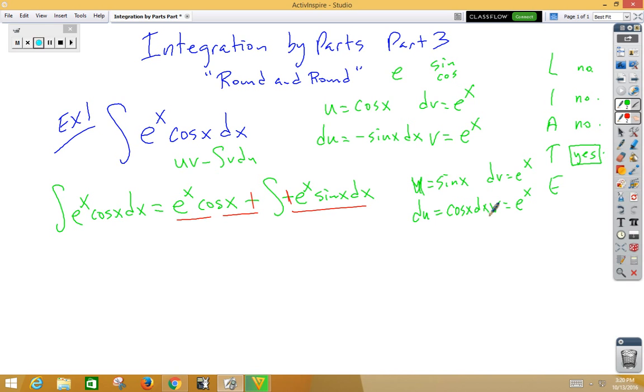Copy the problem again. We've got the integral of e to the x cosine x is equal to e to the x cosine x plus, well let's see, now we need to do our formula. u times v is e to the x sine x minus the integral of vdu, is e to the x cosine x dx.